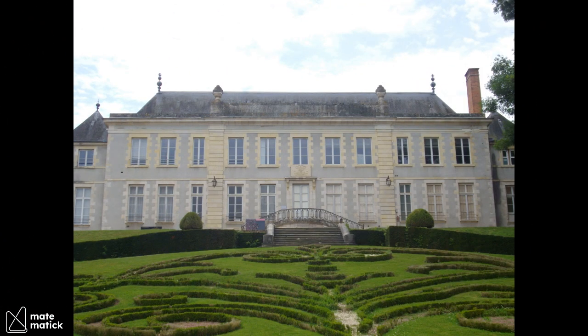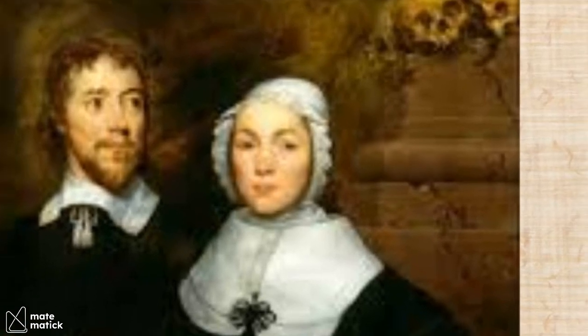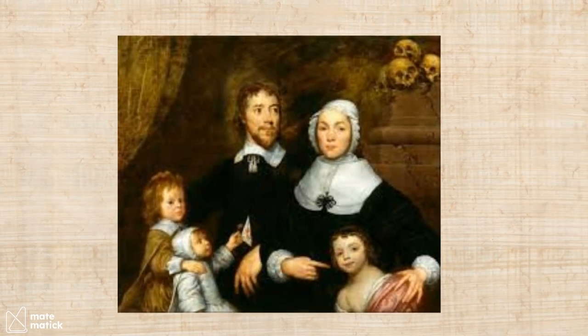Pierre went to the University of Orléans and studied law. He later bought a role in a French court and married Louise DeLong. They had eight kids, five surviving to adulthood.